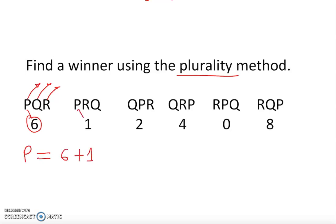Remember, the first letter will get the votes. So Peter has 7 votes. Quincy got 4 plus 2, which equals 6 votes.